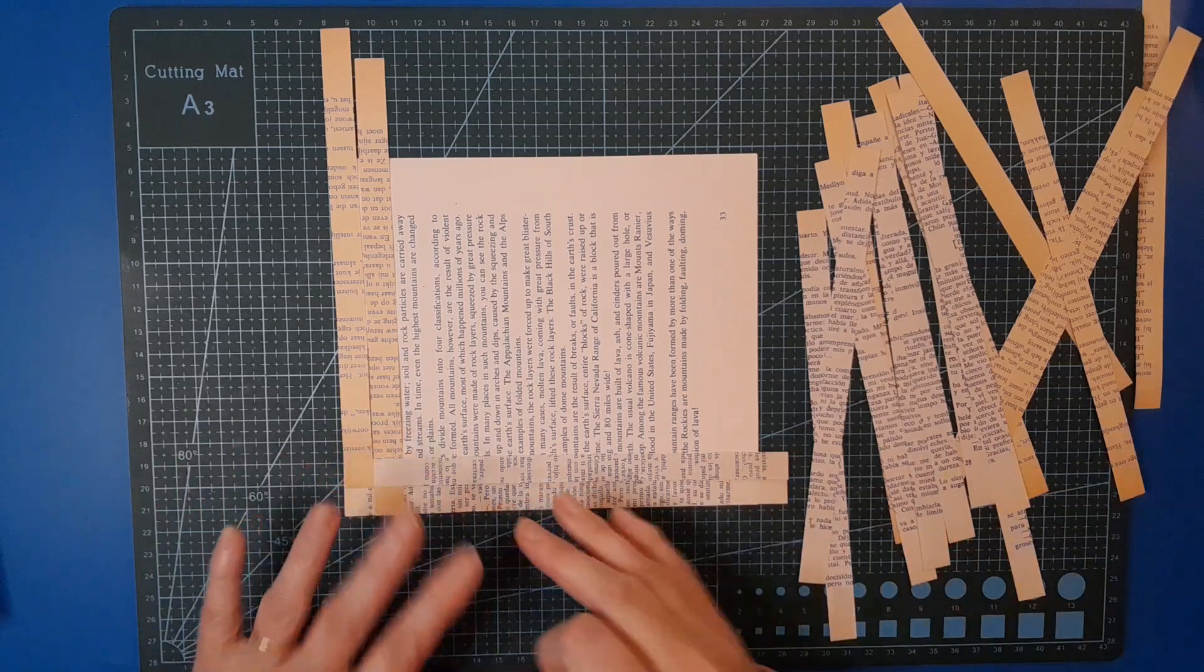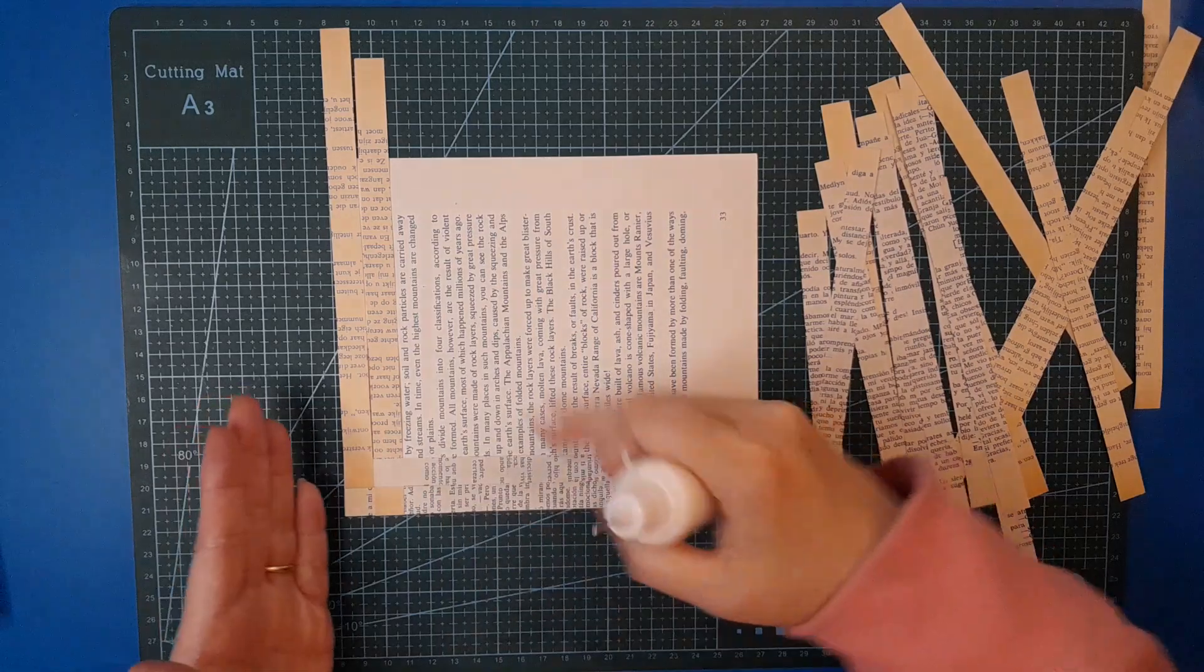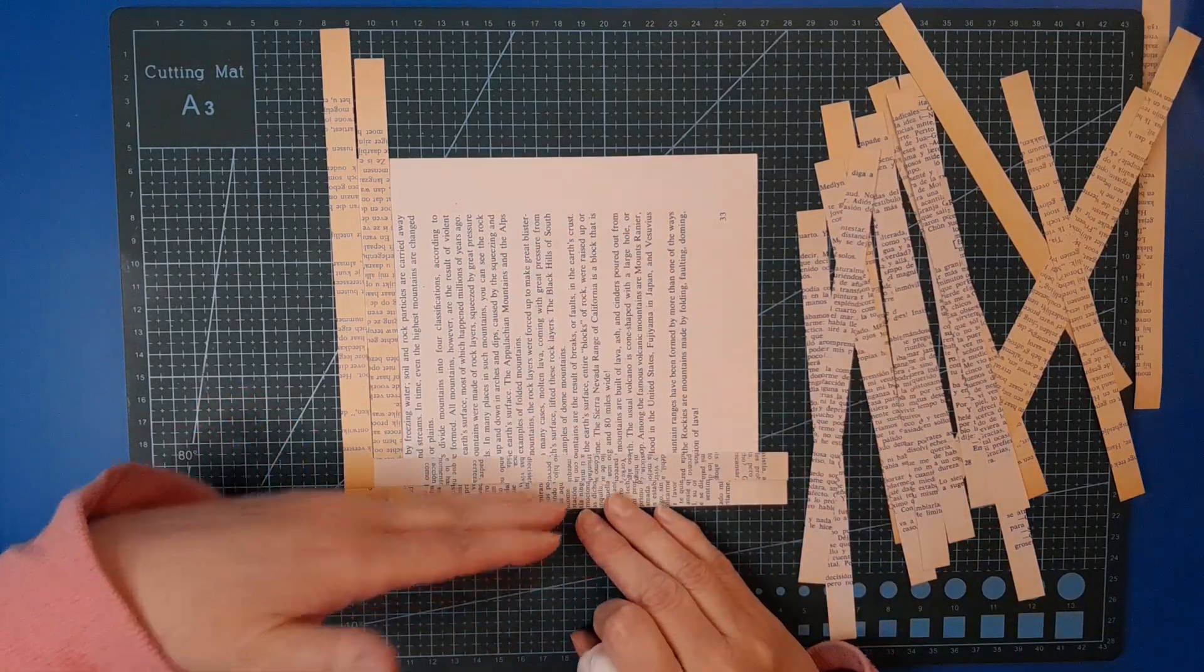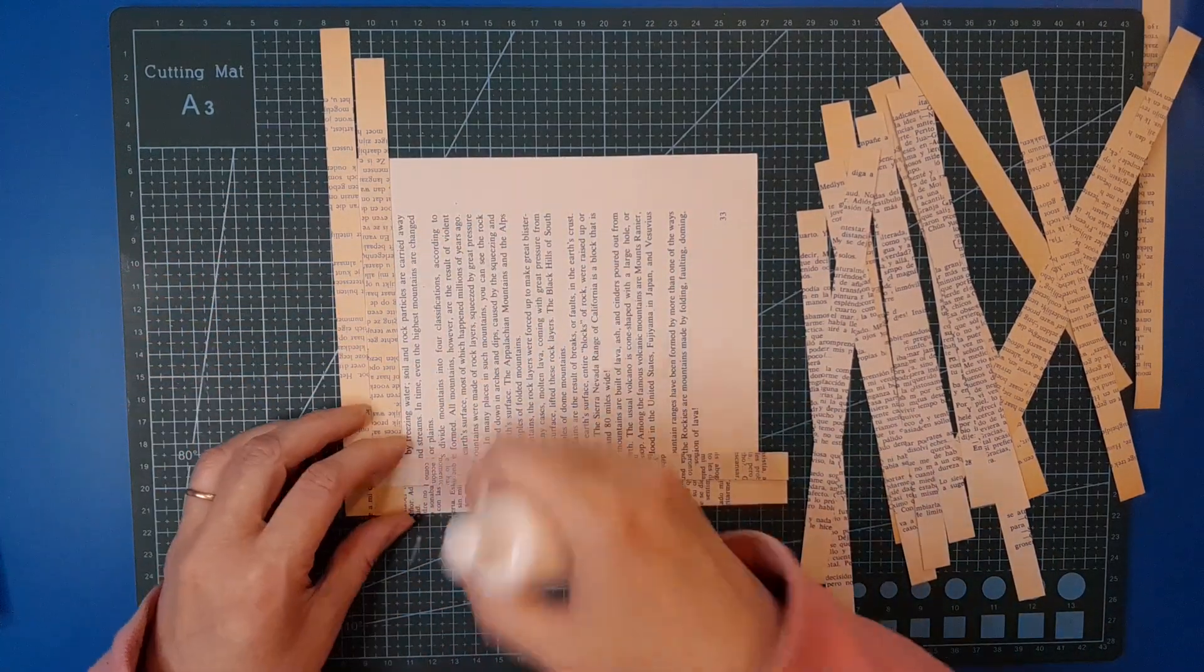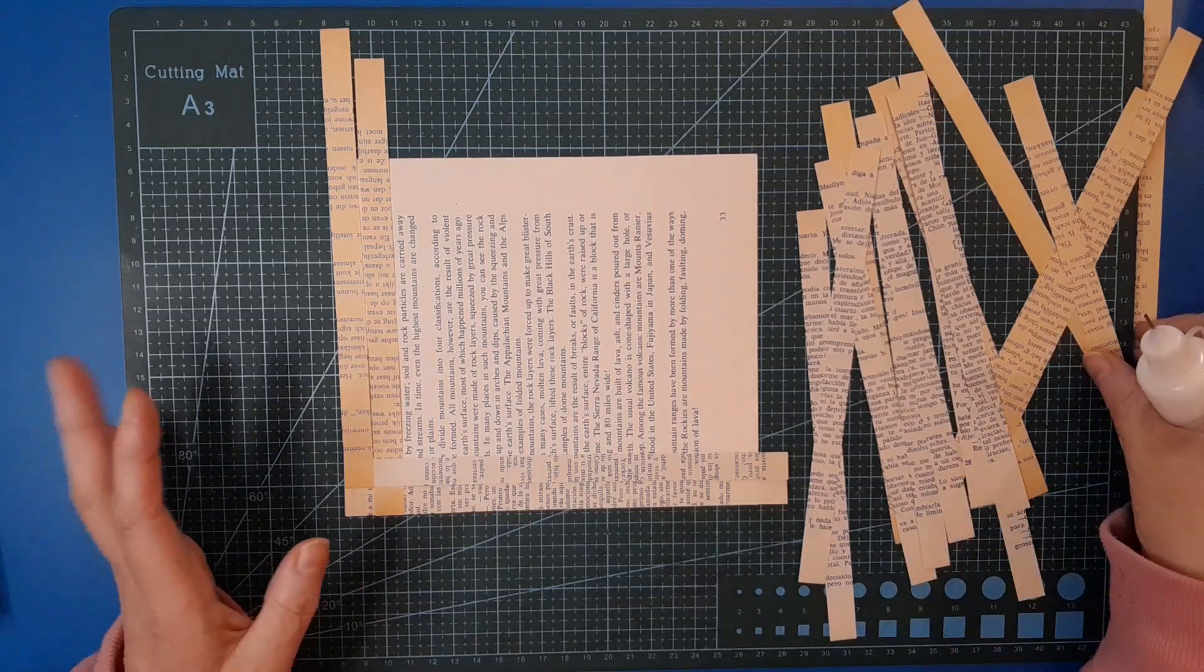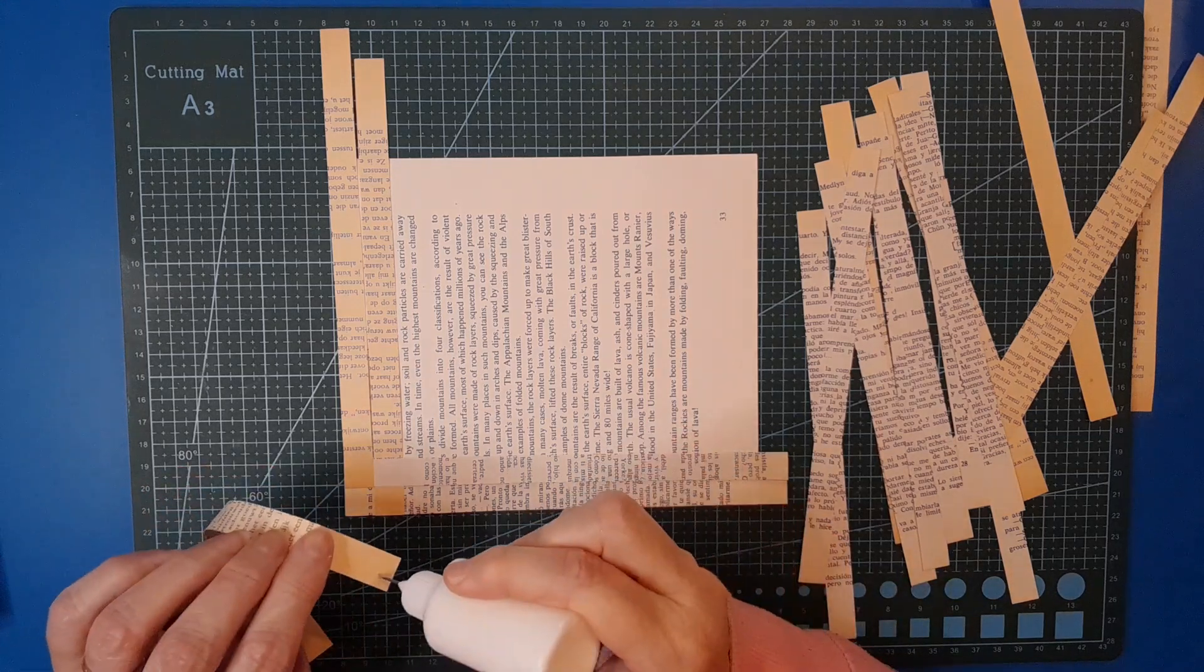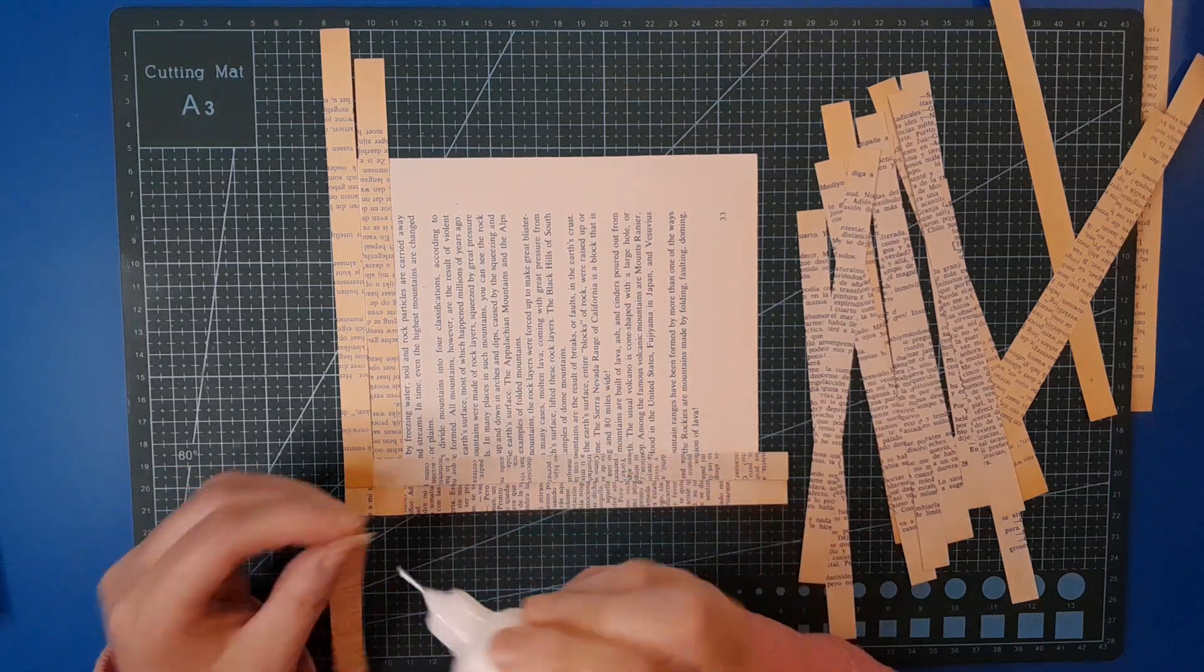I prefer to do strip by strip - a strip this way then a strip this way, backwards and forwards. I've found if I go all this way and then come back and do the weaving, that's where errors creep in and I end up making mistakes. But do whatever's easiest for you.